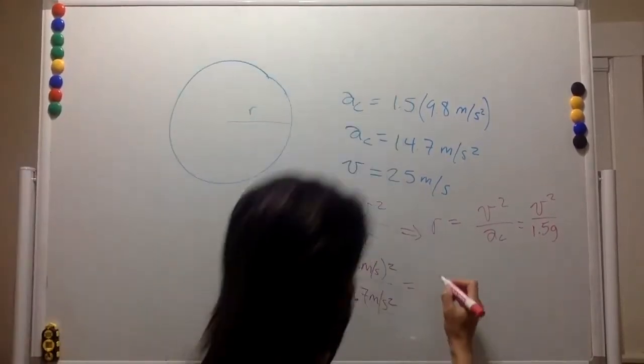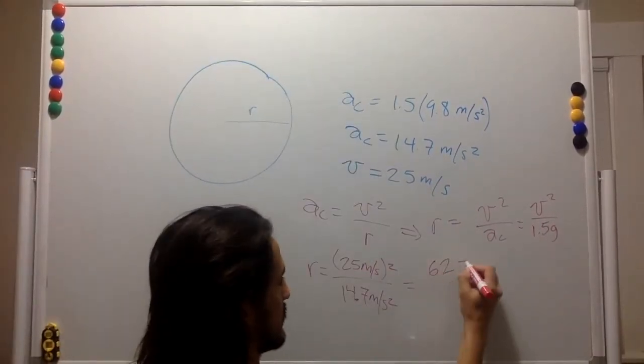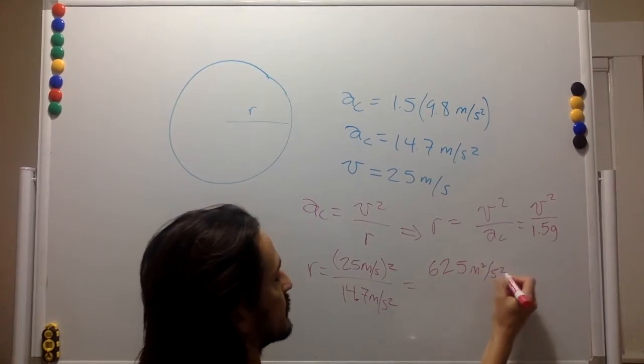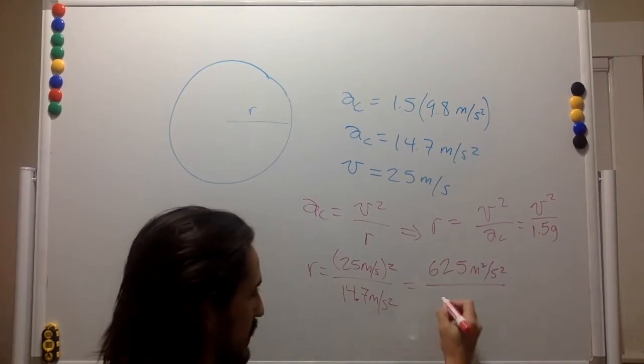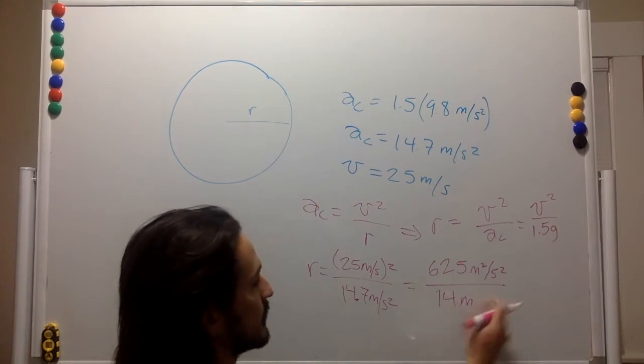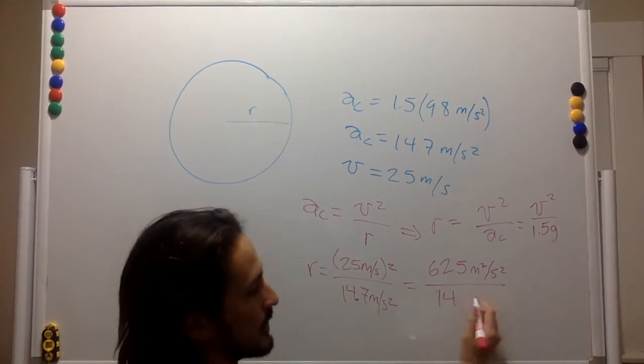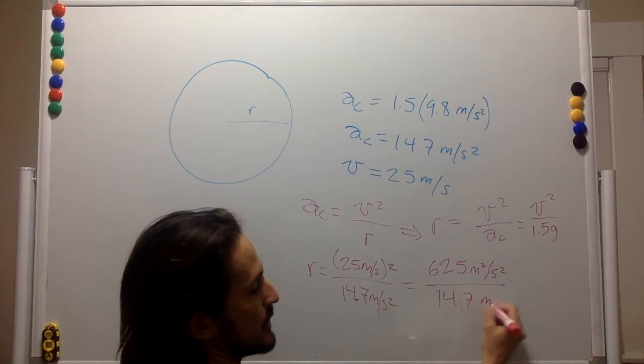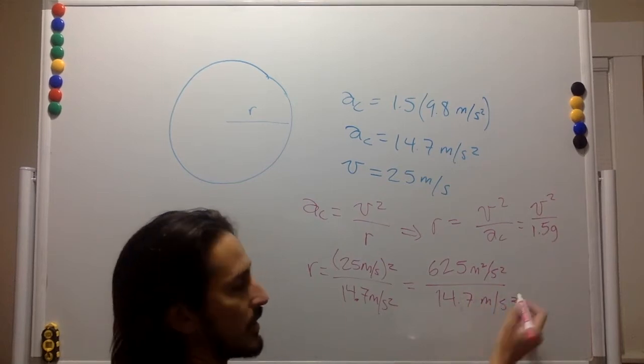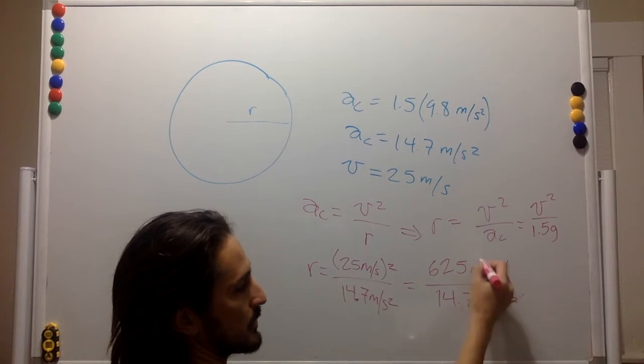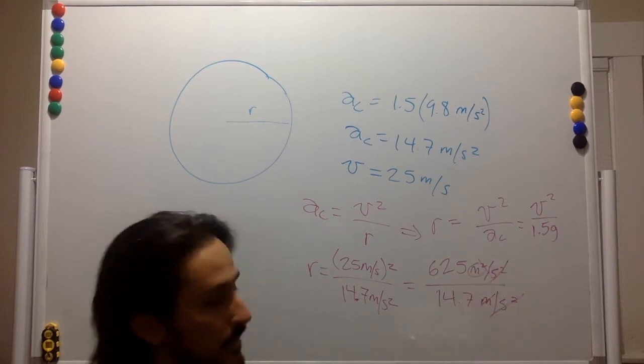So that's 625 meters squared per second squared divided by 14.7 meters per second squared. The seconds squared cancel out and we're left with meters.